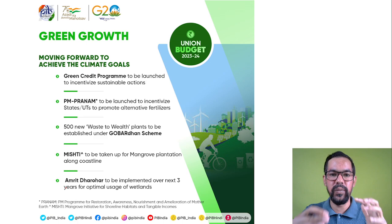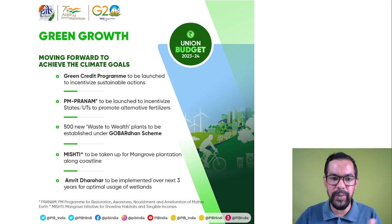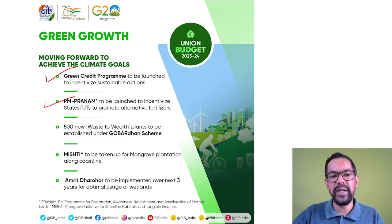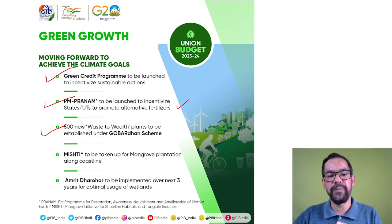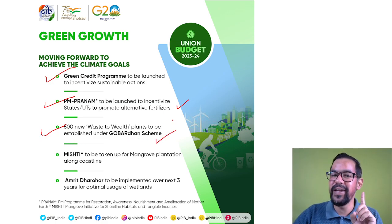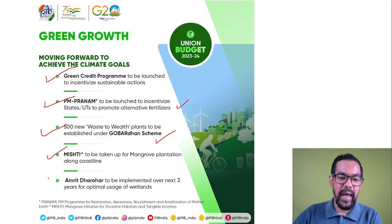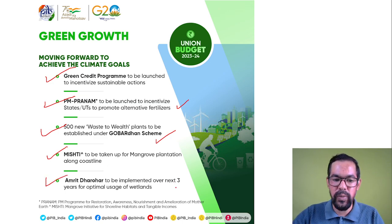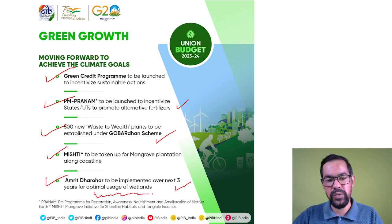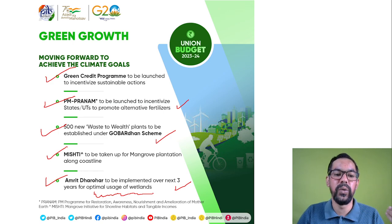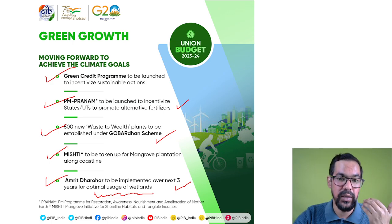On green growth — one of the seven Sapt Rishi priorities: a Green Credit Program will be launched with incentives for stakeholders. Pradhan Mantri PRANAM Scheme will be launched for fertilizers. 500 new Waste-to-Wealth plants will be established under the Govardhan Scheme. Steps will be taken for mangrove plantation. Amrit Dharuva will be implemented over three years for the optimal use of wetlands for tourism and other purposes.